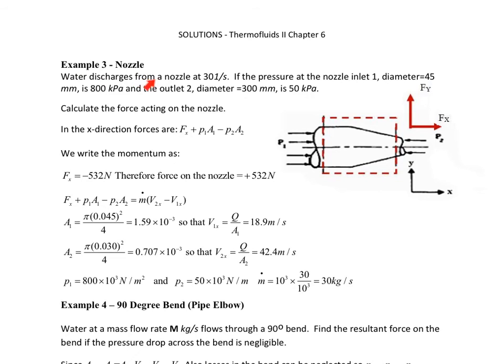So here we are told the water discharges from a nozzle at 30 litres per second. You are given the pressure at the nozzle inlet 1, diameter 45 mm, 800 kilopascals, and at the outlet 2, diameter 300 mm and 50 kilopascals.